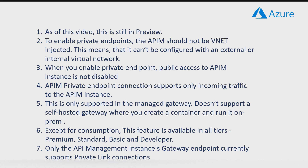When you enable private endpoint, public access to the APIM instance is not disabled automatically. For example, if you enable a private endpoint for App Service, internet access is completely disabled immediately — it can only be reached via the private endpoint. But in the case of the APIM instance, it is still accessible over the internet by default. If you want it disabled, we have to explicitly run a command to disable it — I will show that in the demo. An APIM private endpoint connection supports only incoming traffic to the APIM instance and is only supported in managed gateway, not a self-hosted gateway.